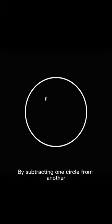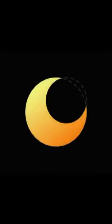This is a circle. By subtracting one circle from another, we get a crescent moon.